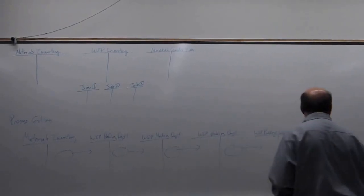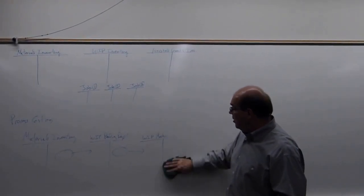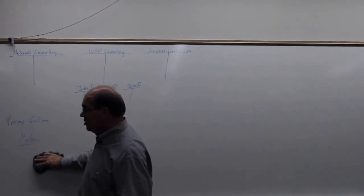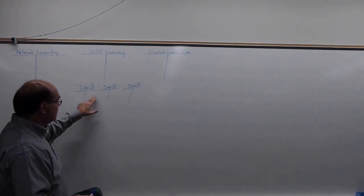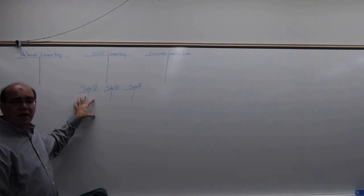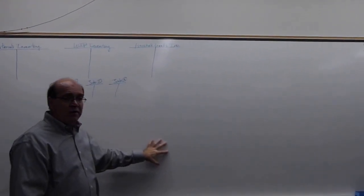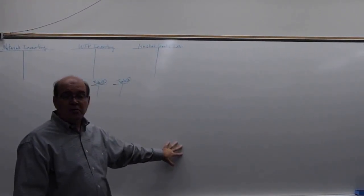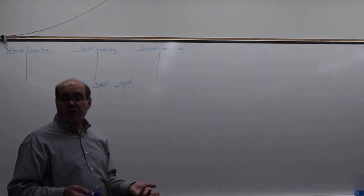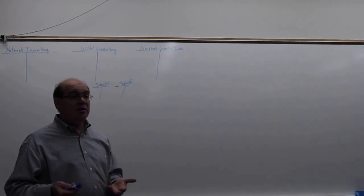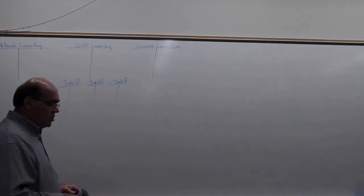One key difference: in job order costing, when we finish a job, we know the cost and can divide by units made to get a unit cost. In process costing, since the process never really finishes, we find an average cost. A can of Pringles made at 10am Tuesday versus 4pm Thursday shouldn't differ much in cost, because it's a standardized mass-produced process. We'll cover process costing more in Chapter 17.